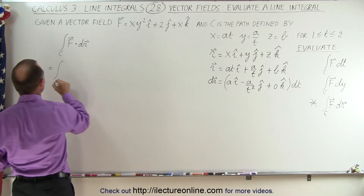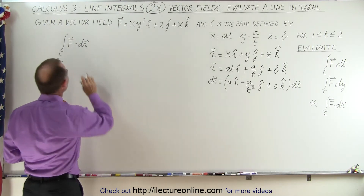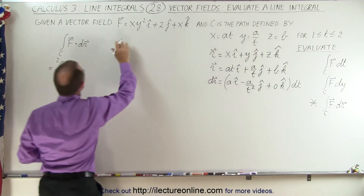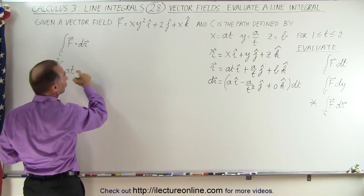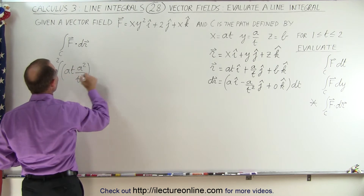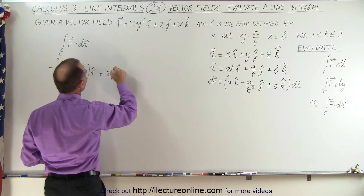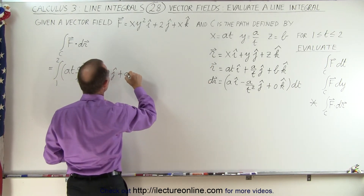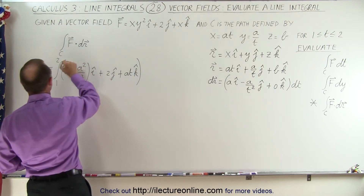This becomes equal to the integral from 1 to 2 — those are the limits of integration. The vector field expressed in terms of the parametric equations is: a·t times y squared, which is a²/t² in the i direction, plus 2 in the j direction, plus x which equals a·t in the k direction.